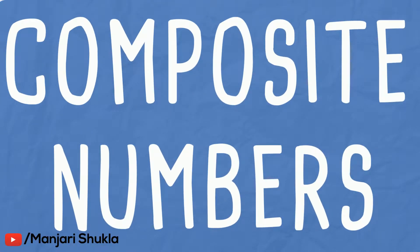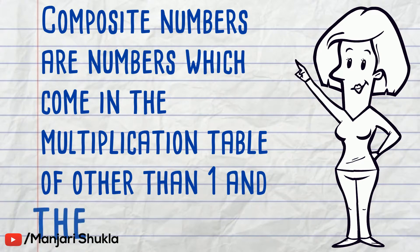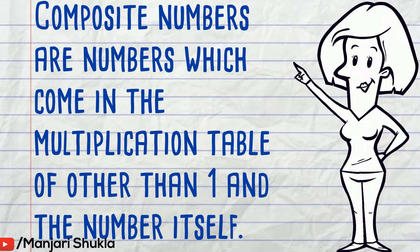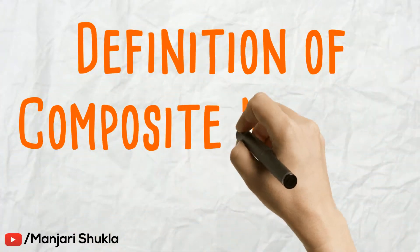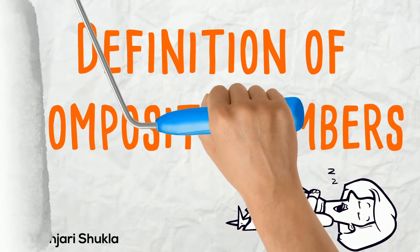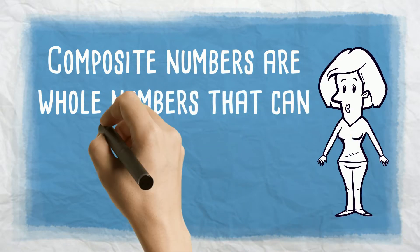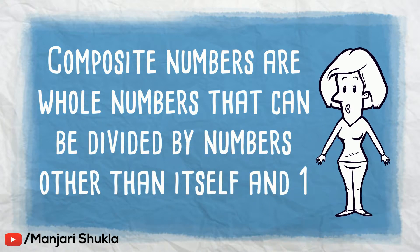Definition of composite numbers: Composite numbers are numbers which come in the multiplication table of other than one and the number itself. In other words, composite numbers are whole numbers that can be divided by numbers other than itself and one.